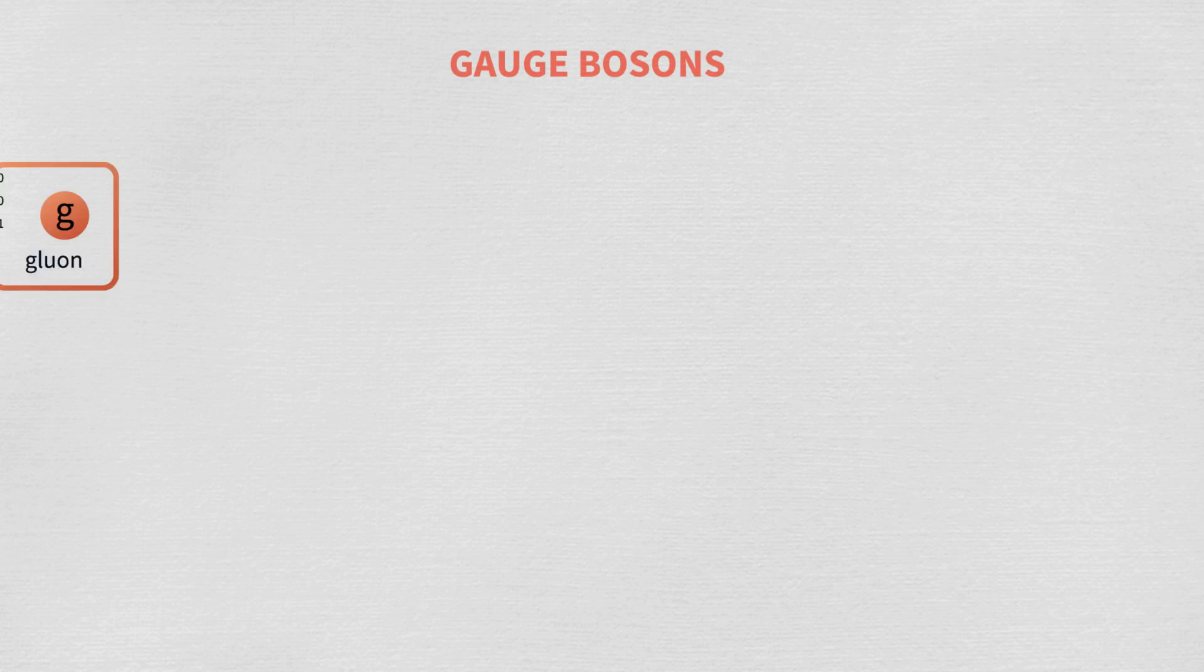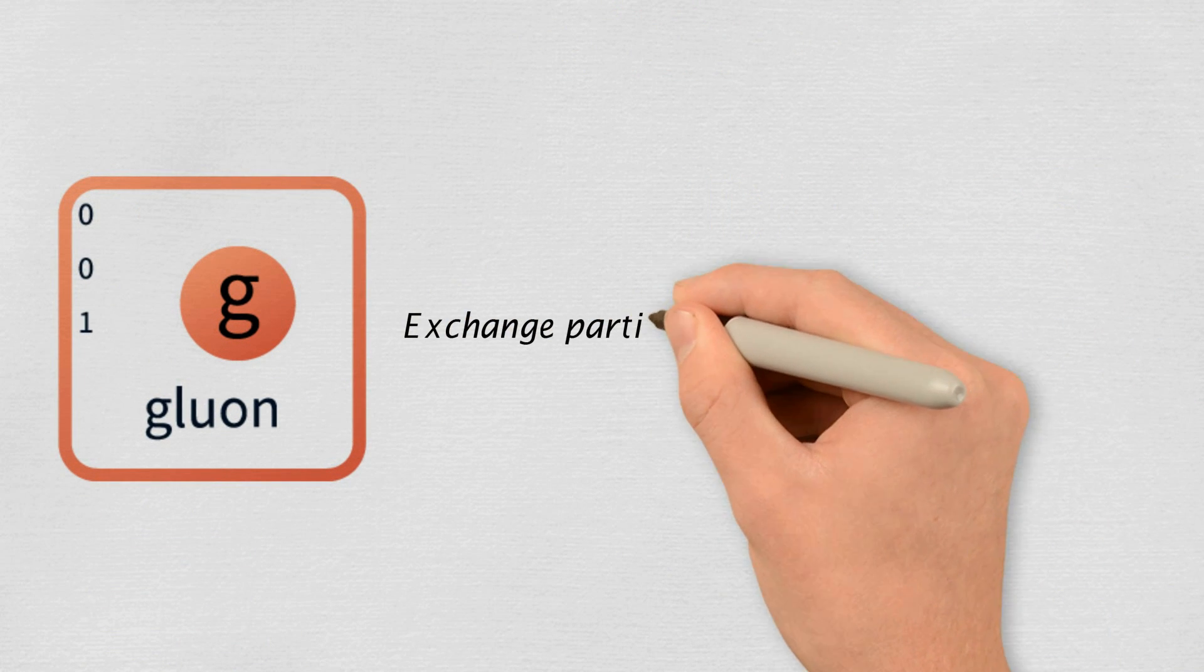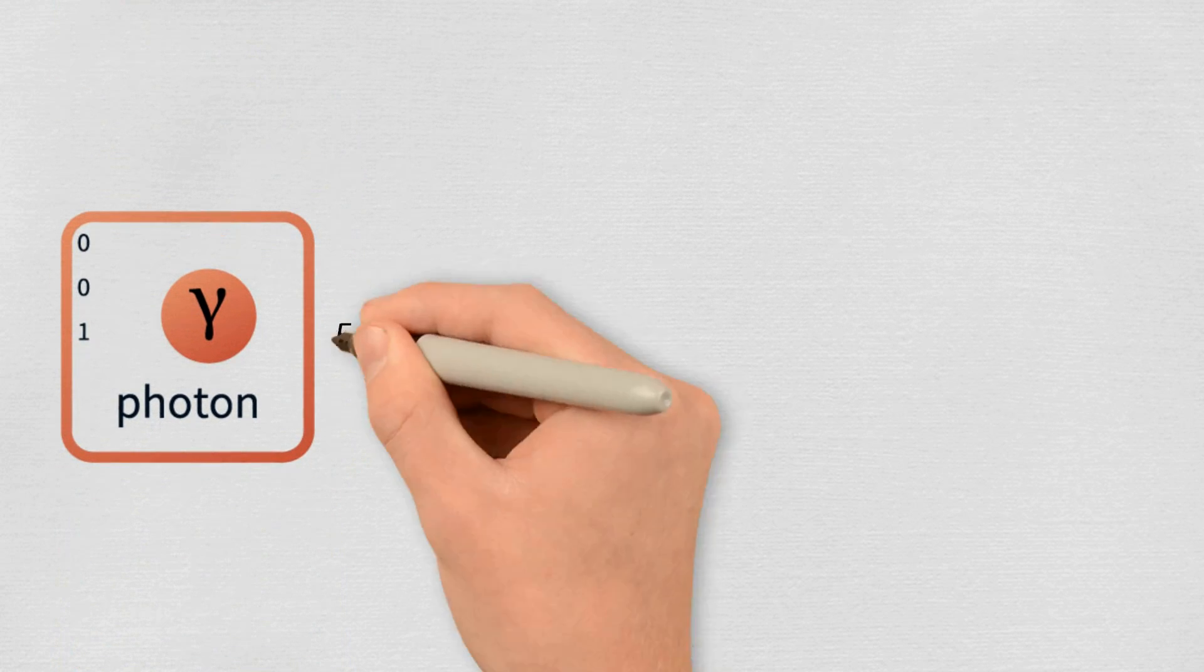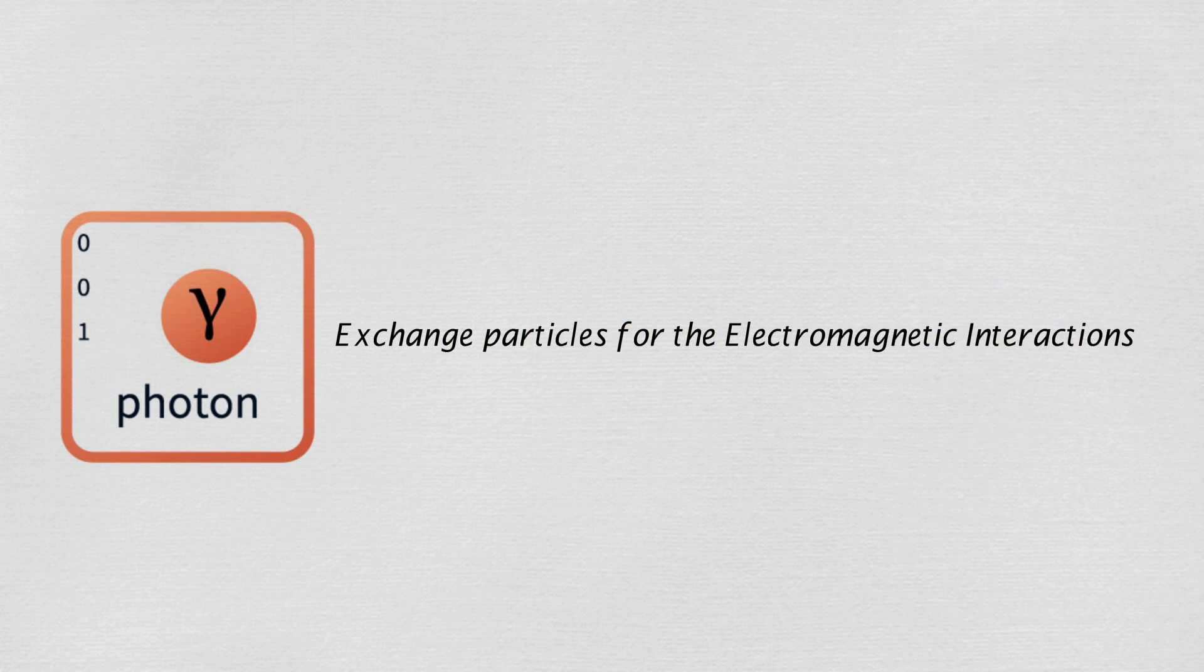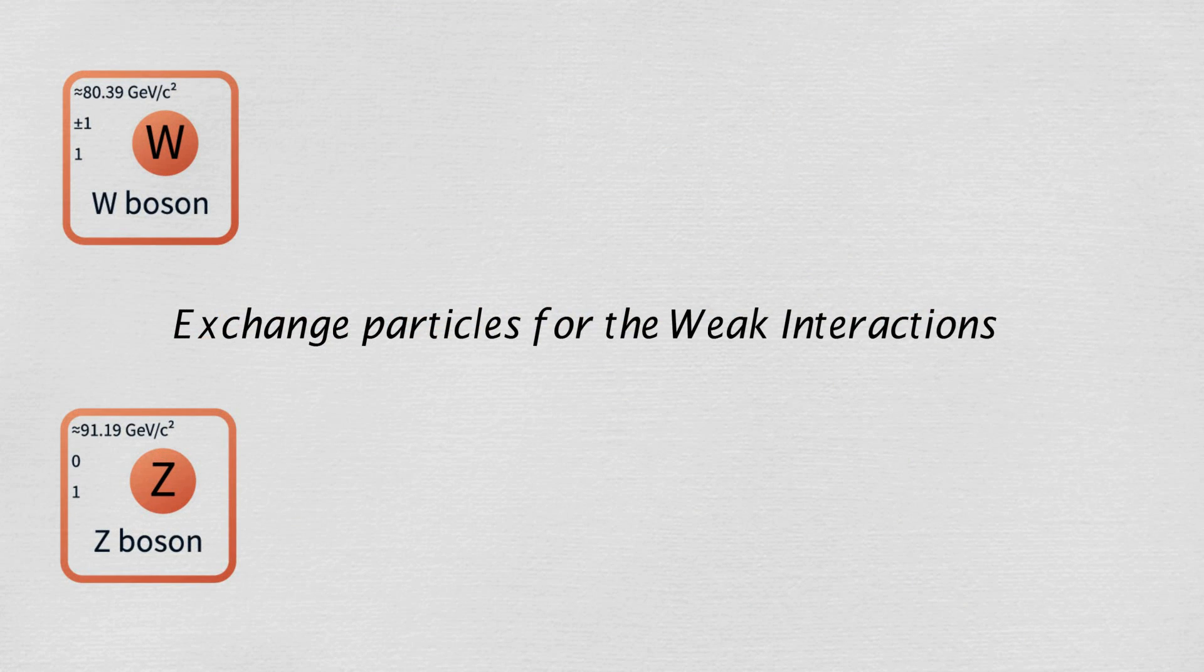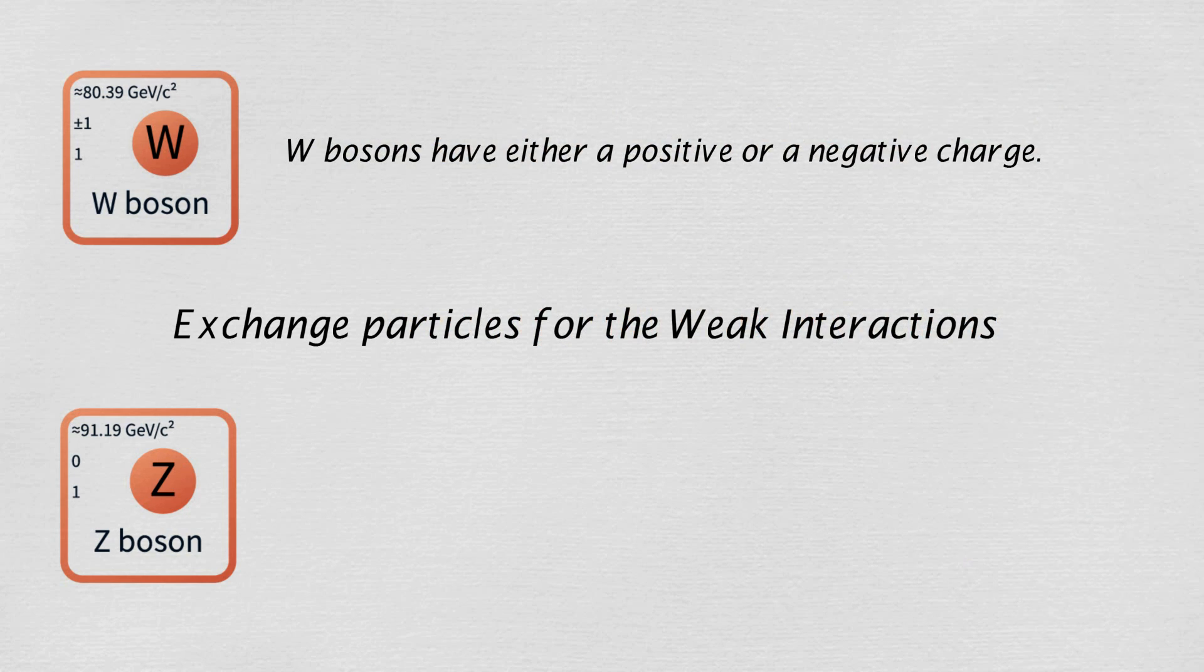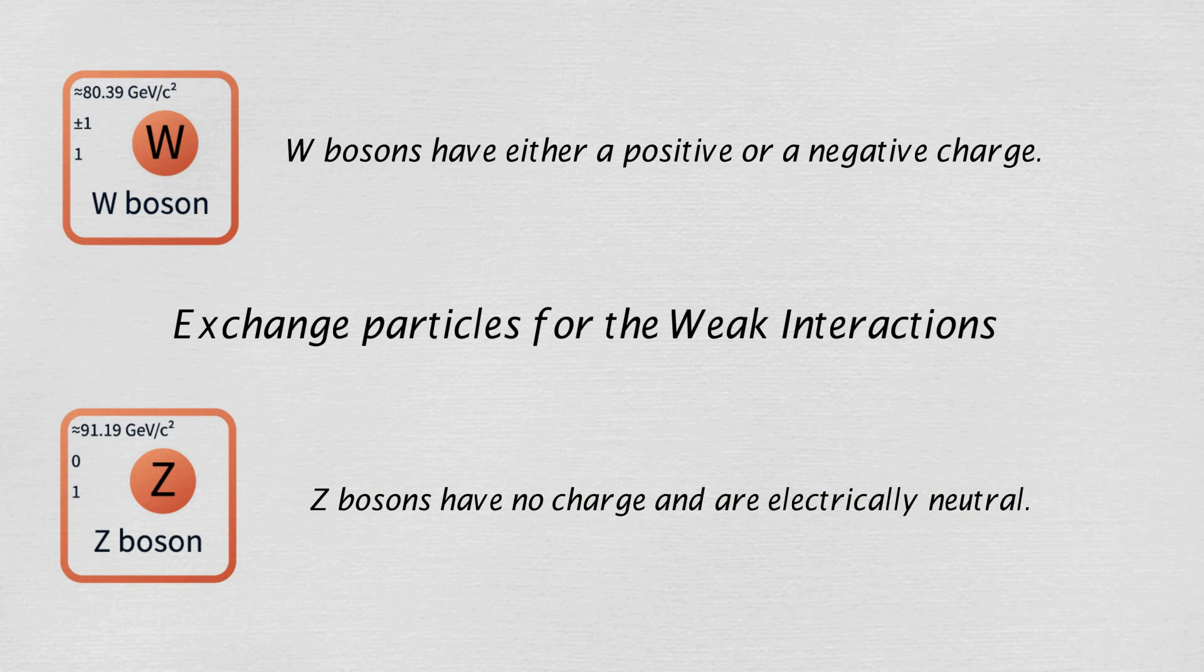Gauge bosons are of four types: gluons, photons, W and Z bosons. Gluons are the exchange particles for the strong interactions. Photons are the exchange particles for the electromagnetic interactions. W and Z bosons are the exchange particles for the weak interactions. W bosons have either a positive or a negative charge. Z bosons have no charge and they are electrically neutral.